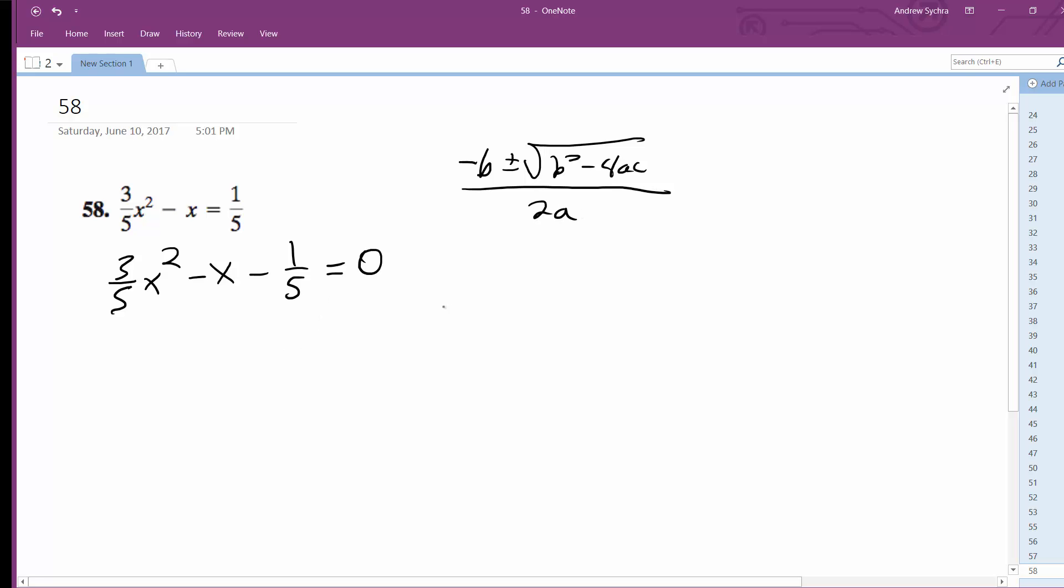Alright, so then what we're gonna have here for b is opposite of negative 1 which is 1. B's right here, it's negative 1. So we have plus or minus square root of b squared which is 1 minus 4 times a which is 3/5, and then negative 1/5 which is c. 2a, so 2 times 3 over 5.